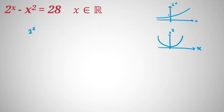Since 2 to the x minus x squared equals 28, and we know x squared is greater than or equal to 0, it follows that 2 to the x must be at least 28. Because 2 to the x is an increasing function, we conclude x is greater than 4.